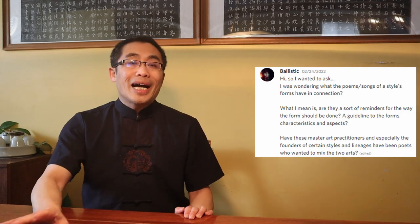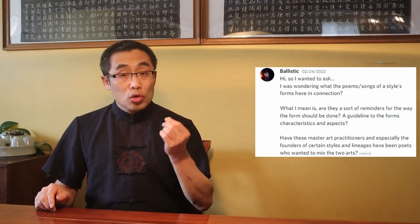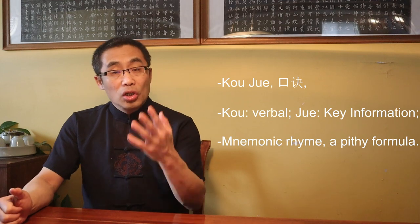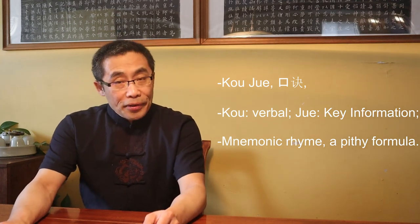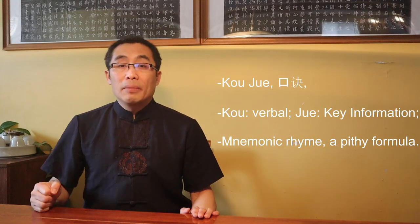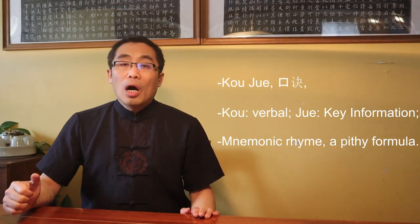Ballistics asks a question about those poems and songs recorded in some traditional martial art training manuals. He wants to know if those contents were created to work as reminders of the way the form should be, or as a guideline to the form's characteristics and aspects. Thank you, Ballistics. In the Chinese martial art community, we call those poems and songs Kou Jue. Kou means verbal, Jue means key information. Put together, it means a mnemonic formula, often in rhymes.